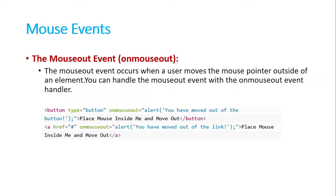Then we have onmouseout. This event occurs when somebody moves the mouse outside of an element. You can handle the mouseout event with the onmouseout event handler, and similarly execute any function when somebody moves outside of an element.